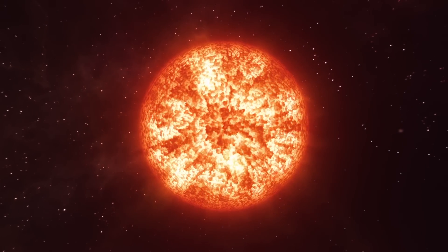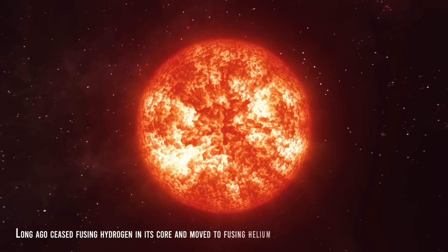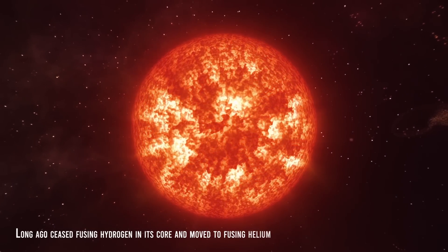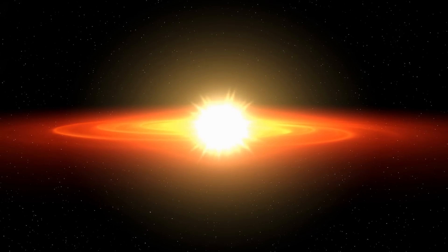Betelgeuse is nearing the end of its life. It's massive because long ago it ceased fusing hydrogen in its core and moved to fusing helium. A shell of burning hydrogen surrounds the center. The energy from the fusion events in and around the core pushes the outer layers of the atmosphere outward, pushing the star to expand.